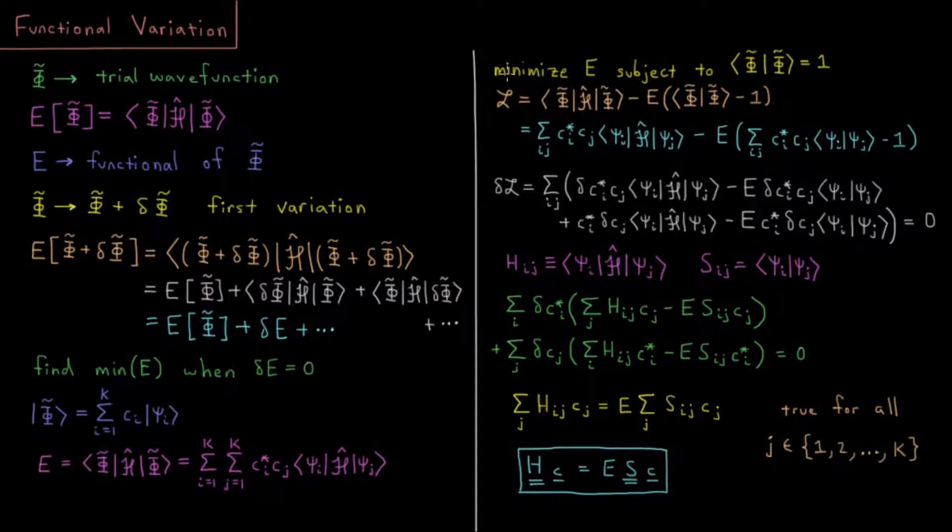We're going to minimize our energy here, but there's an additional constraint we need to worry about. We need our wave function to remain normalized as we do these variations. We know that the integral of psi star psi over all space should be one. There should be a 100% chance of finding the system in some state once we integrate over all the variables.